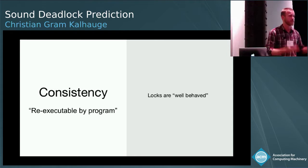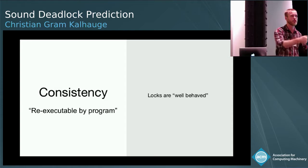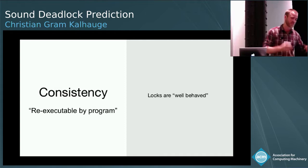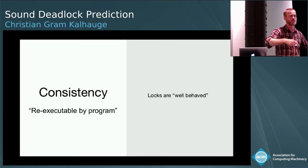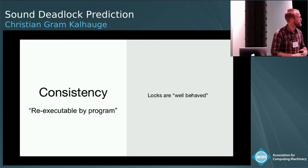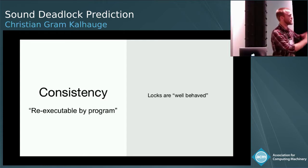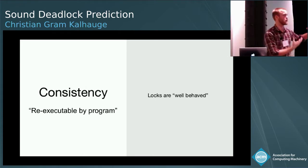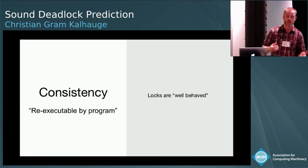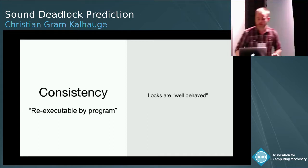We also require that locks are well-behaved, meaning any thread that releases a lock can only release a lock it acquired itself. This is very important for detecting sound deadlocks — imagine you find a deadlock and then another thread just releases it two events later, and then you're back to running. This is completely embedded in Java, so it's not a problem. But if you were doing the same project for C, you would have to instruct your users not to do that, or at least say that the analysis is not sound if that happens.